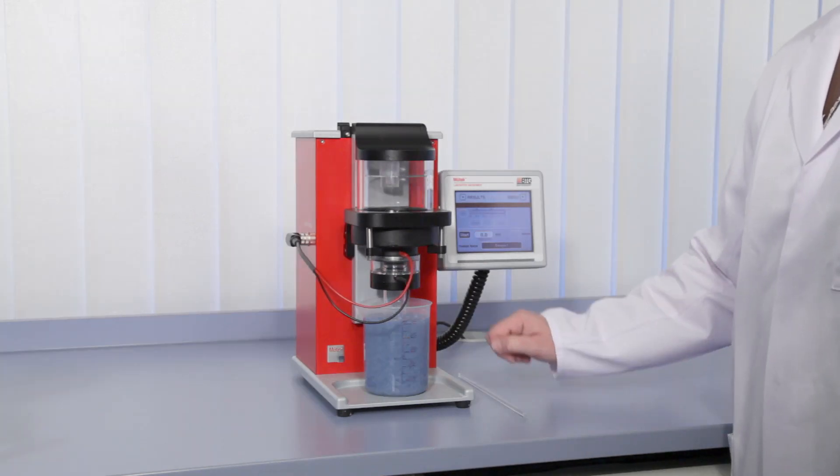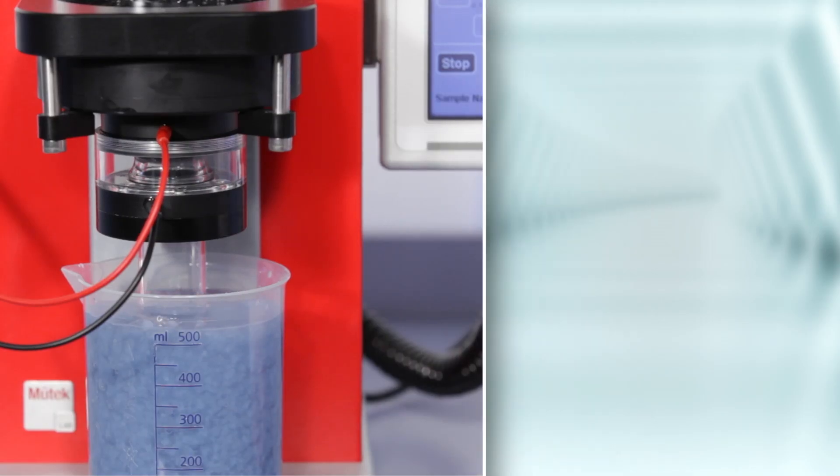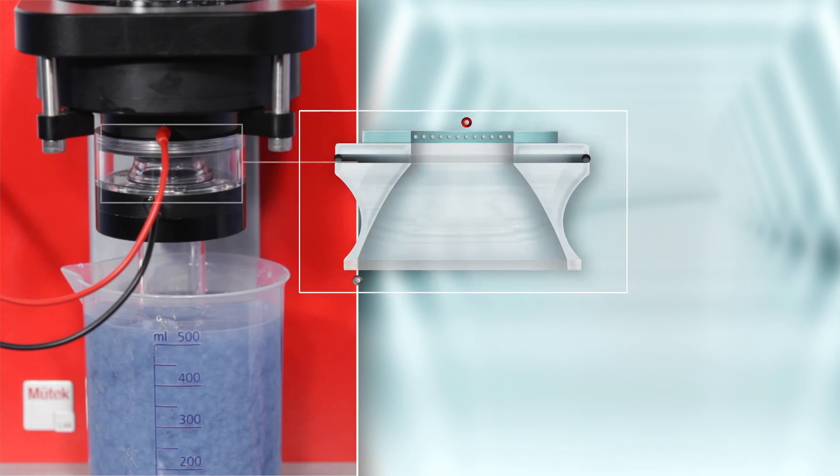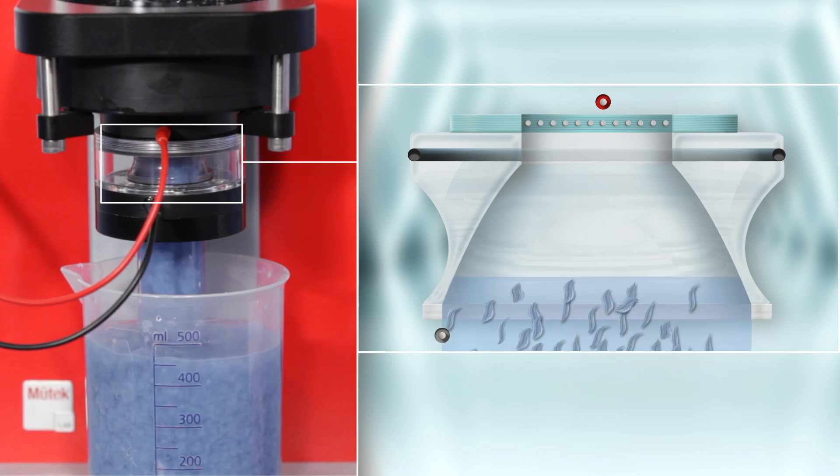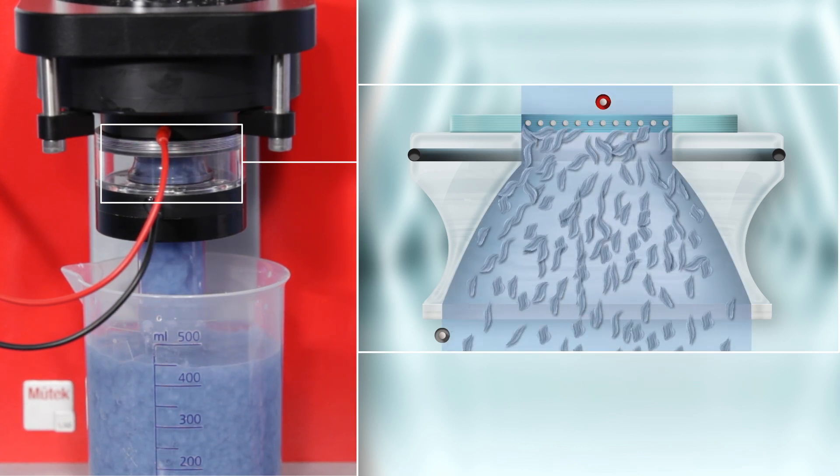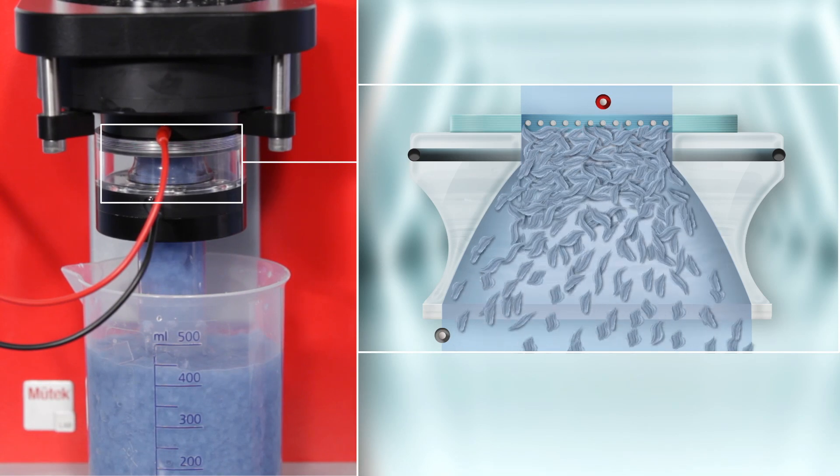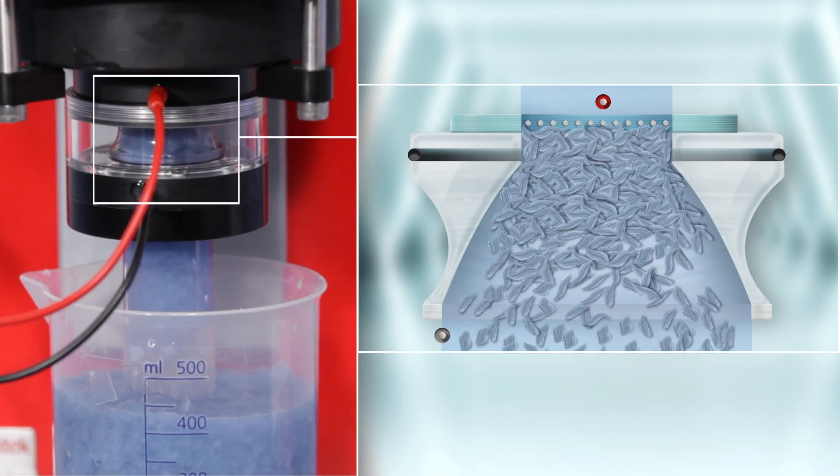Now, start measurement. Once measurement with the MUTEC SZP system zeta potential is started, the sample will be taken in from the beaker by vacuum, and transferred through the suction tube into the centerpiece of the measuring cell.